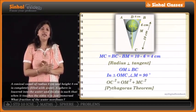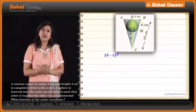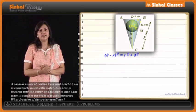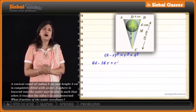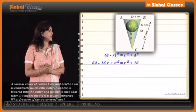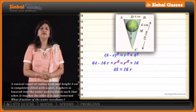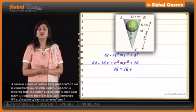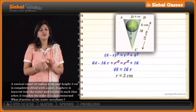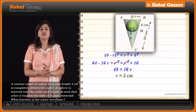By Pythagoras: OC² = OM² + MC², so (8 − R)² = R² + 4². Expanding: 64 − 16R + R² = R² + 16. Cancelling R² from both sides gives 48 = 16R, so R = 3 cm. We have found the radius of the sphere as 3 cm.